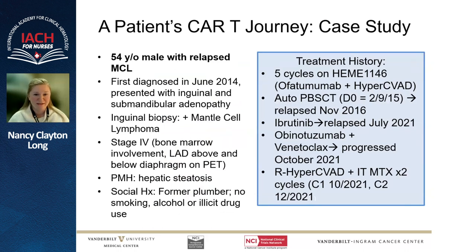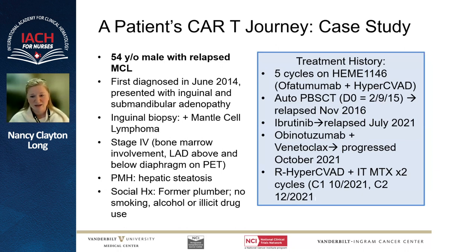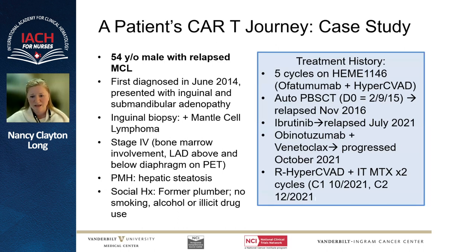For nurses and APPs, I wanted to follow a patient through a case study intertwined with this talk. Our patient is a 54-year-old male with a past medical history of fatty liver and relapsed mantle cell lymphoma. He noticed a lump in his left groin he thought was a hernia, then left submandibular adenopathy he thought was from poor dental hygiene. An ENT evaluation and CT revealed multiple areas of adenopathy; biopsy was consistent with mantle cell lymphoma. Bone marrow biopsy was also positive, and with disease below and above the diaphragm, he was stage four. His treatment history was extensive — including an auto-transplant and multiple lines of therapy prior to being presented for CAR-T. He was active, a plumber, with no smoking, alcohol, or illicit drug use.